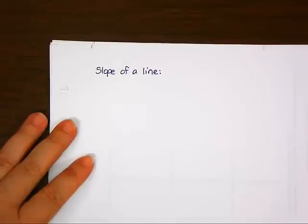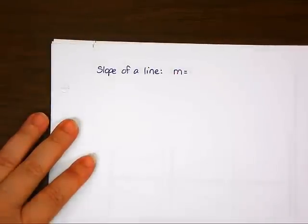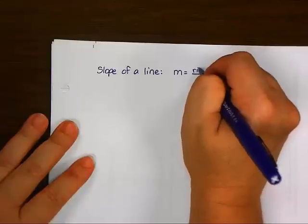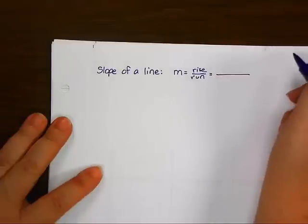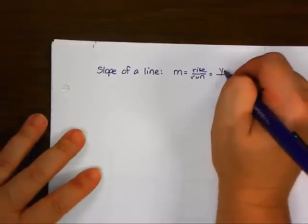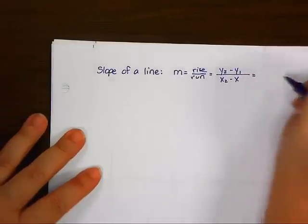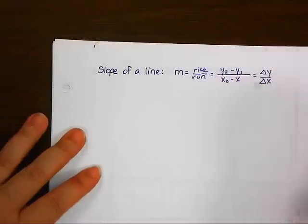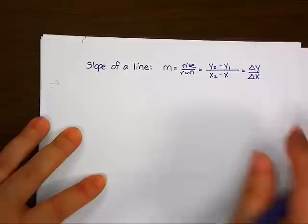First of all, what is the formula for finding the slope of a line? Rise over run is one of them. Another one is Y2 minus Y1 over X2 minus X1. And there's a third one that's a little obscure but needs to be known: change in Y over change in X, or delta Y over delta X. That's going to come into play a little bit later.